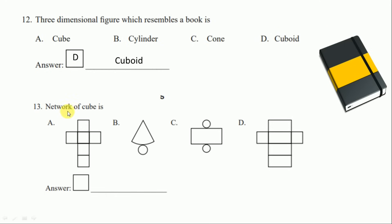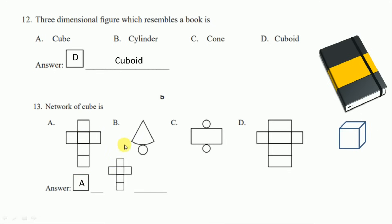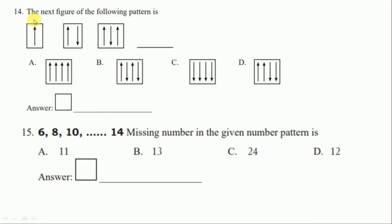Question number thirteen: the net of a cube. All faces of a cube are squares. In option A, the figure contains all squares, so the right answer is option A.